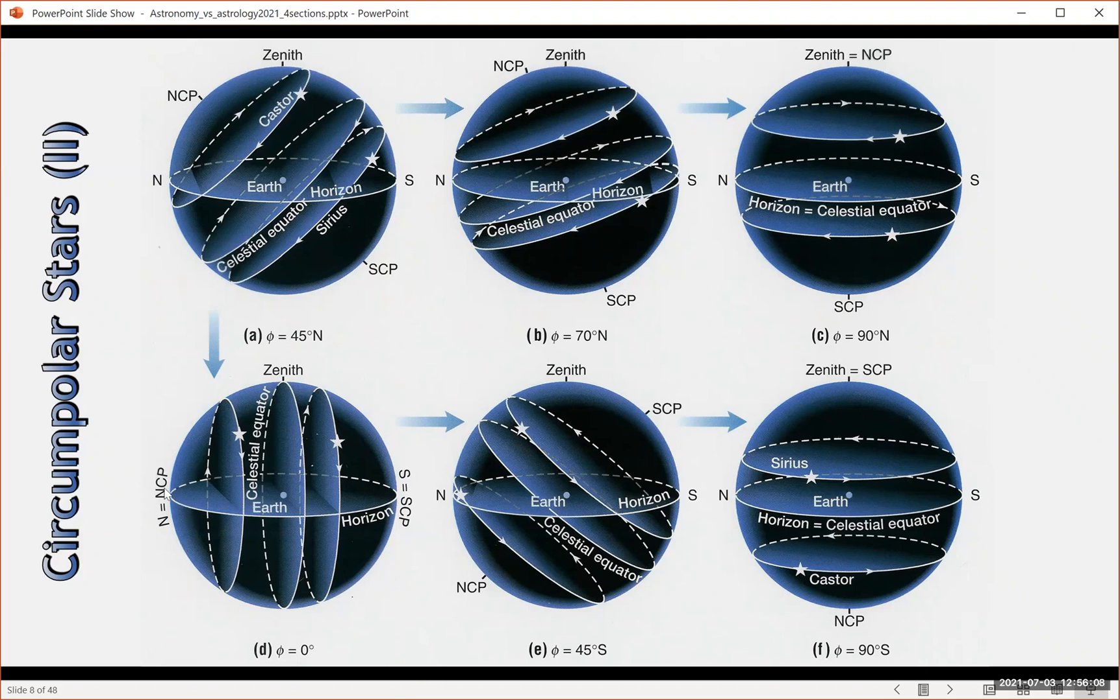There's the other extreme - go to the equator. Here's Earth again, here's our horizon. Now all stars rise and set. There are no circumpolar stars. But as we head further south, now we're at 45 degrees south. And what we're seeing is that Sirius is going to be above the horizon more than not, and Castor is getting to be hard to see. It's close to the horizon and doesn't stay up much. And at the south pole, Sirius will be a circumpolar star, and Castor will not be seen at all from the south pole.